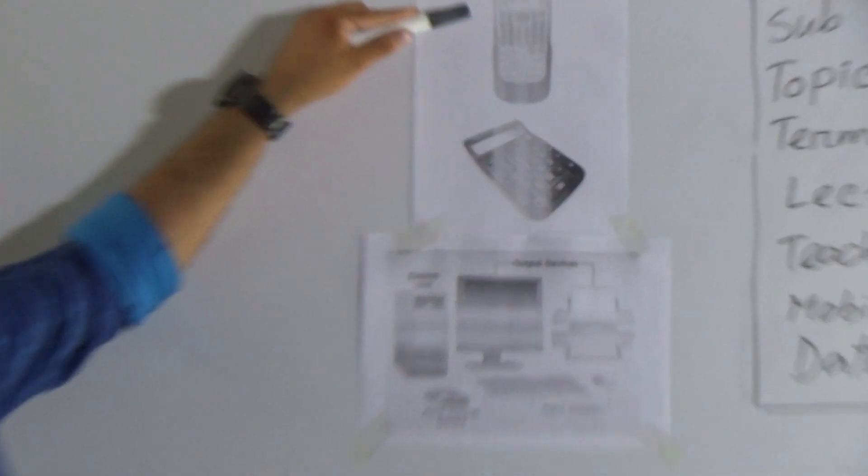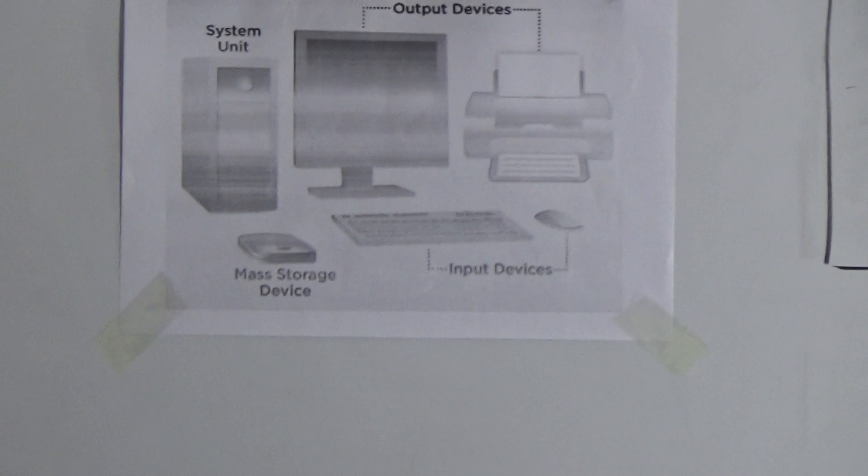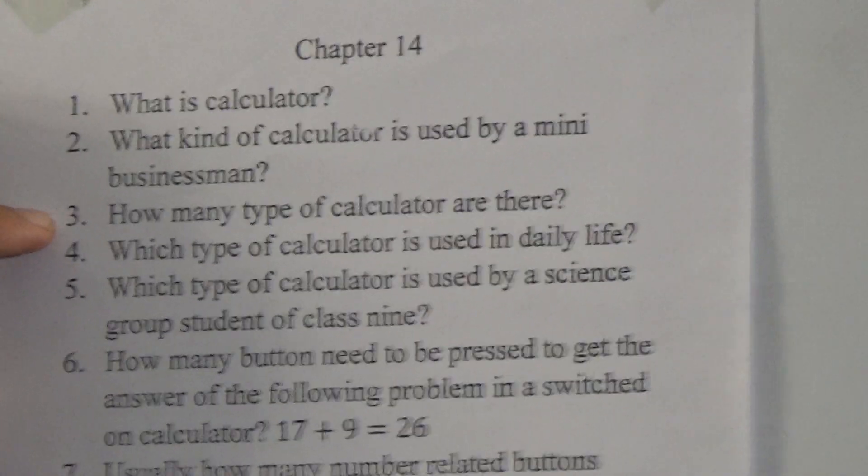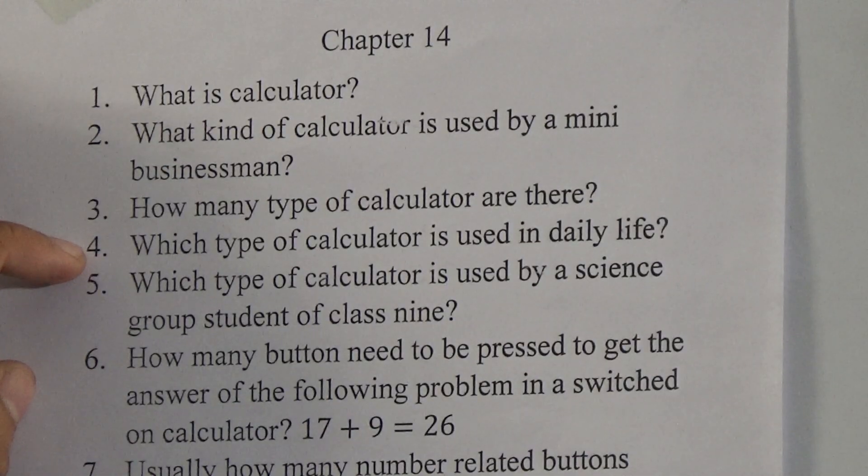Look here, here is a picture of calculators and a picture of computers. Now look here, here are some questions. Number 1, what is calculator? Number 2, what kind of calculator is used by a mini businessman? Number 3, how many type of calculator are there?